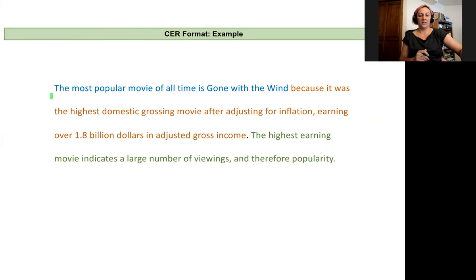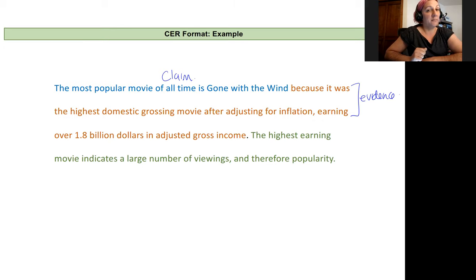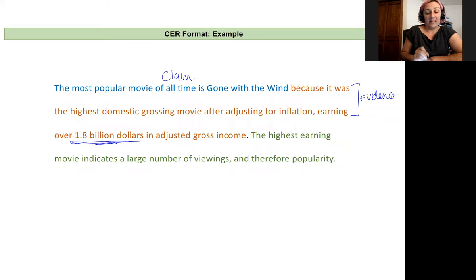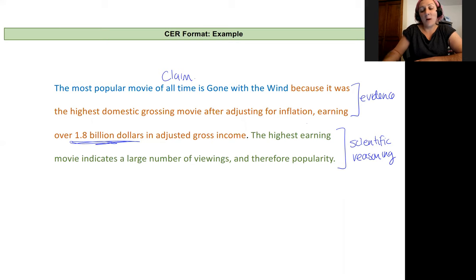Let's look at an example. Taking one of our statements about popular movies: 'The most popular movie of all time is Gone with the Wind' — in blue, that's my claim. Now I follow it with evidence: 'because it was the highest domestic grossing movie after adjusting for inflation, earning over $1.8 billion in adjusted gross income.' I'm citing something very specific as my evidence — it has made the most money once you adjust for inflation. Then I'll link this with scientific reasoning, shown in green: 'The highest-earning movie indicates a large number of viewings and therefore popularity.' I'm choosing to rely on box office numbers to demonstrate popularity, and that's why my evidence supports my claim.